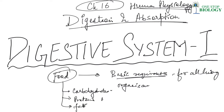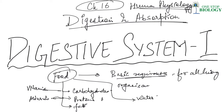Apart from carbohydrates, proteins, and fats, there is also a requirement of vitamins and minerals, which are also considered part of food. Food also contains water, which is important for various metabolic processes and prevents dehydration of the body. So basically, when we talk about food, we say that there are macromolecules in our food — the intake of food is nothing but the intake of macromolecules.